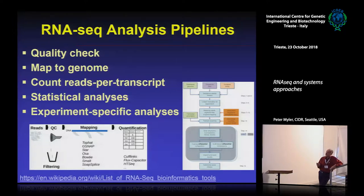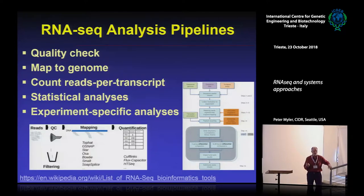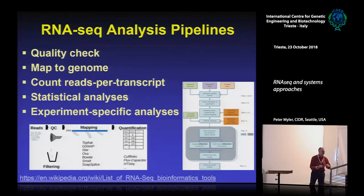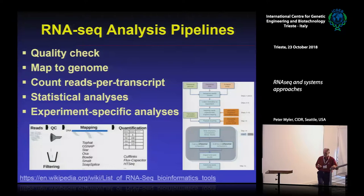You have to take the sequence, do a quality check to make sure it's worthwhile proceeding, then map it to your genome, count the number of reads for each transcript, do statistical analyses to find out whether the differences between conditions are real and reproducible, and then do experiment-specific analyses. Most people string together publicly available programs and write scripts that link them. You need a bioinformatician, but you also need a good idea of what you want to do, because bioinformatics people don't always know enough biology and biologists don't always know enough bioinformatics.